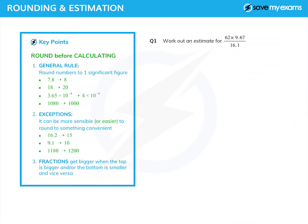Now we're going to look at estimating calculations. This is often a question in its own right and is very useful for checking our answers. We always round the numbers before we actually do the calculation. As a general rule, we round things to one significant figure.